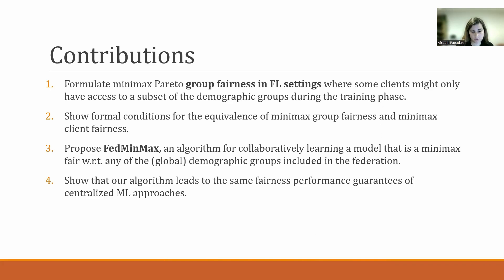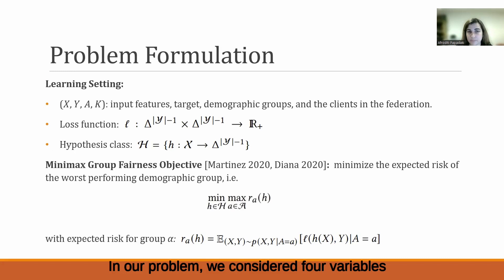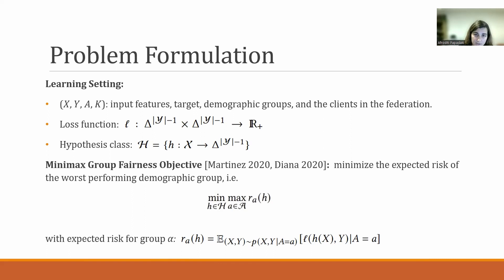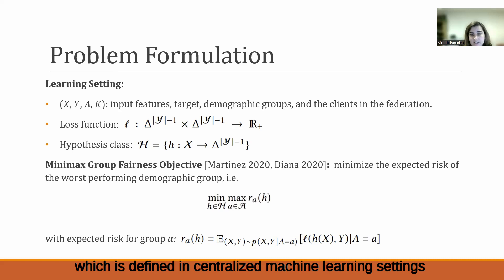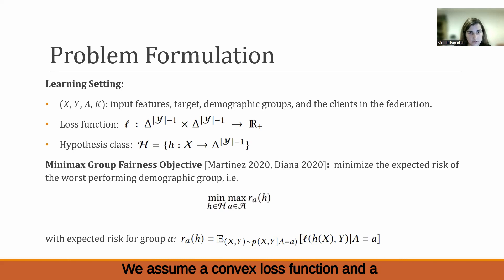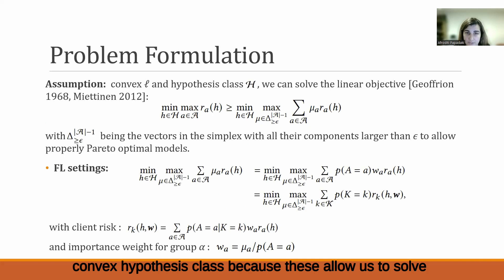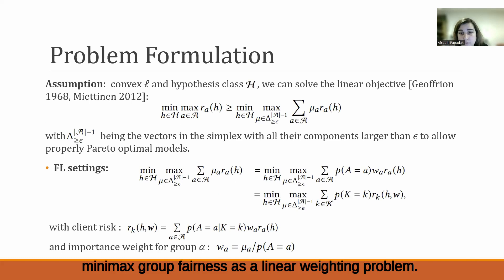In our problem, we consider four variables: the input X, outcome Y, demographic groups A, and the clients participating in the federation K. Given a loss function and hypothesis class, our goal is to ensure Minimax group fairness, which is defined in centralized machine learning settings as a minimization of the expected worst group risk. We assume a convex loss function and a convex hypothesis class because these allow us to solve Minimax group fairness as a linear weighting problem.